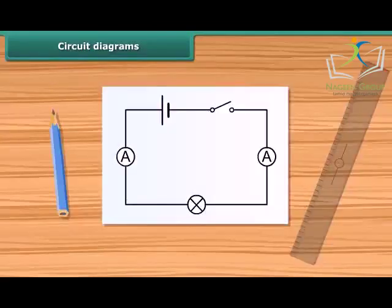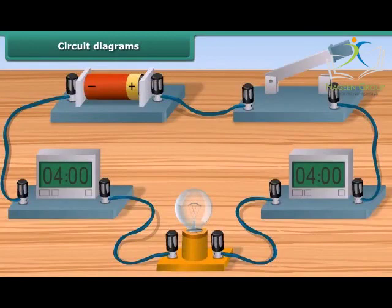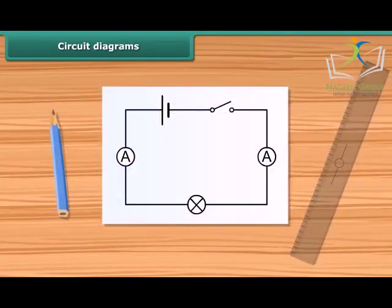A circuit diagram is a simplified representation of an electrical circuit. It is a drawing using standardized symbols of the arrangement, showing how electronic components are connected together.